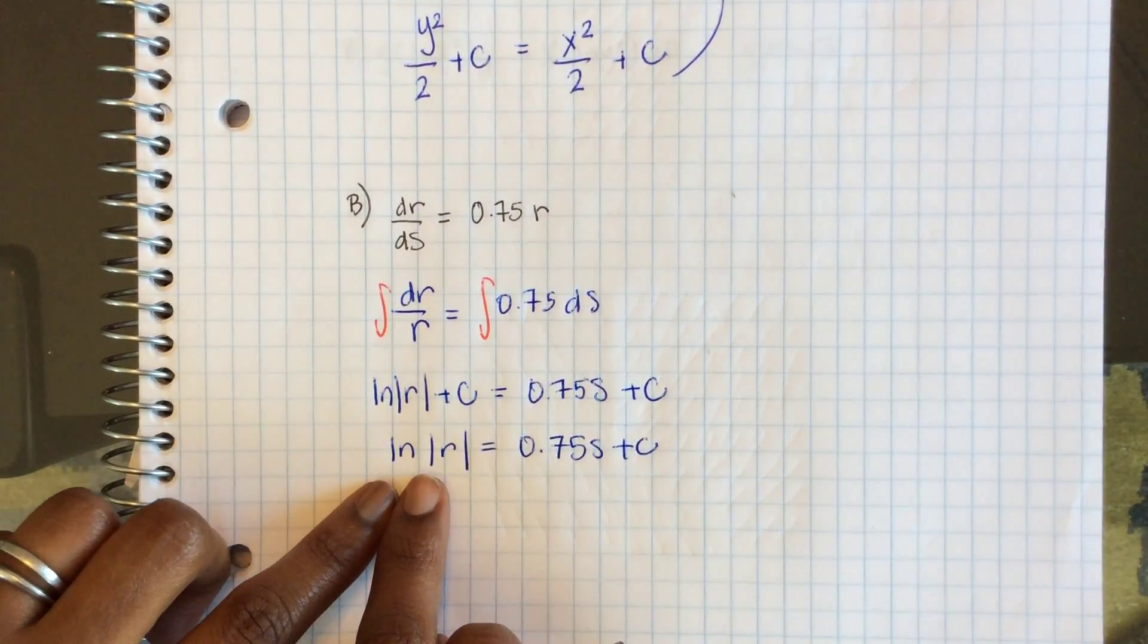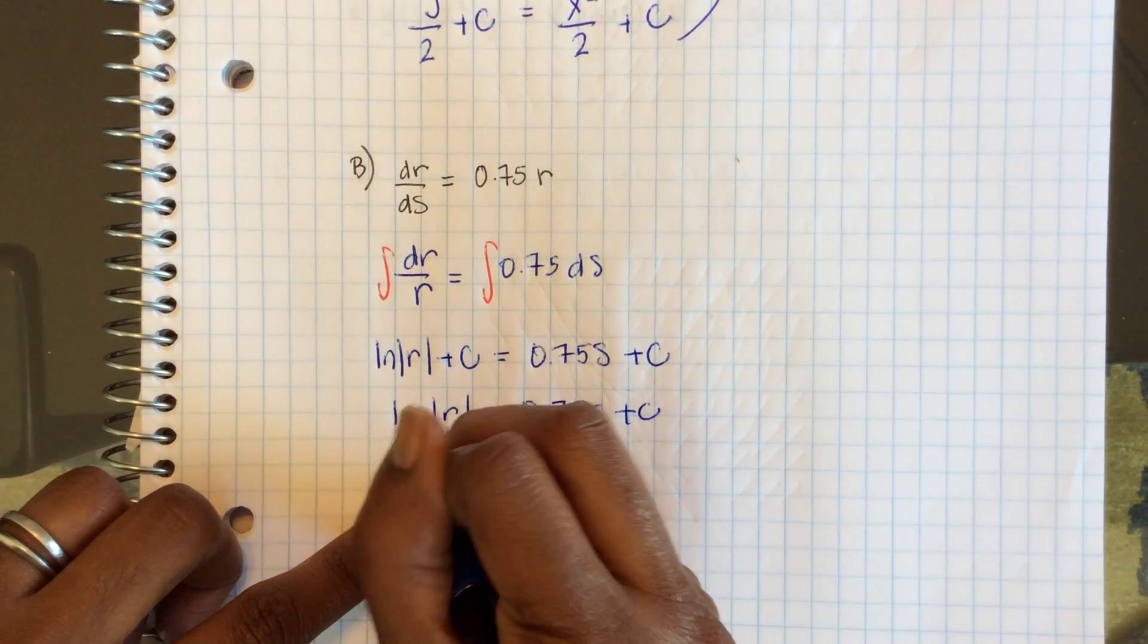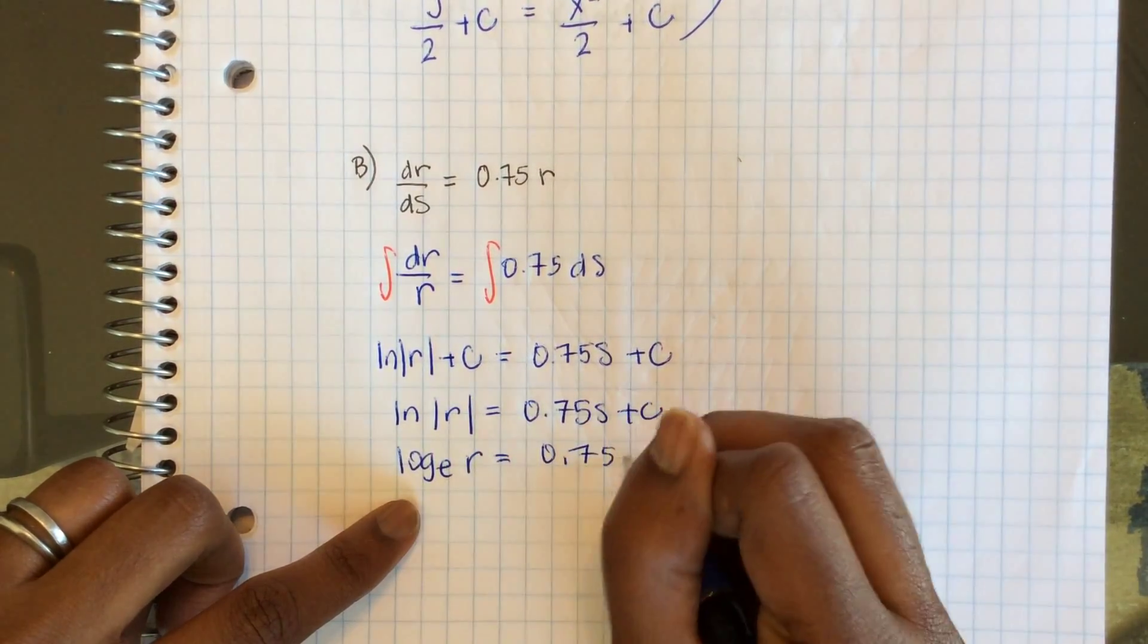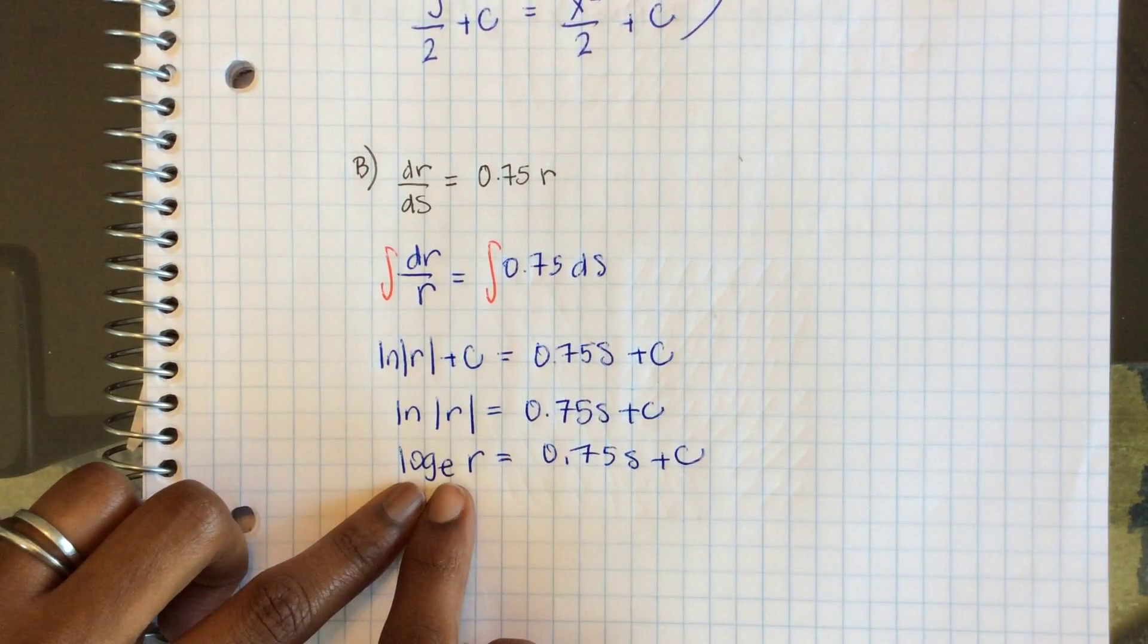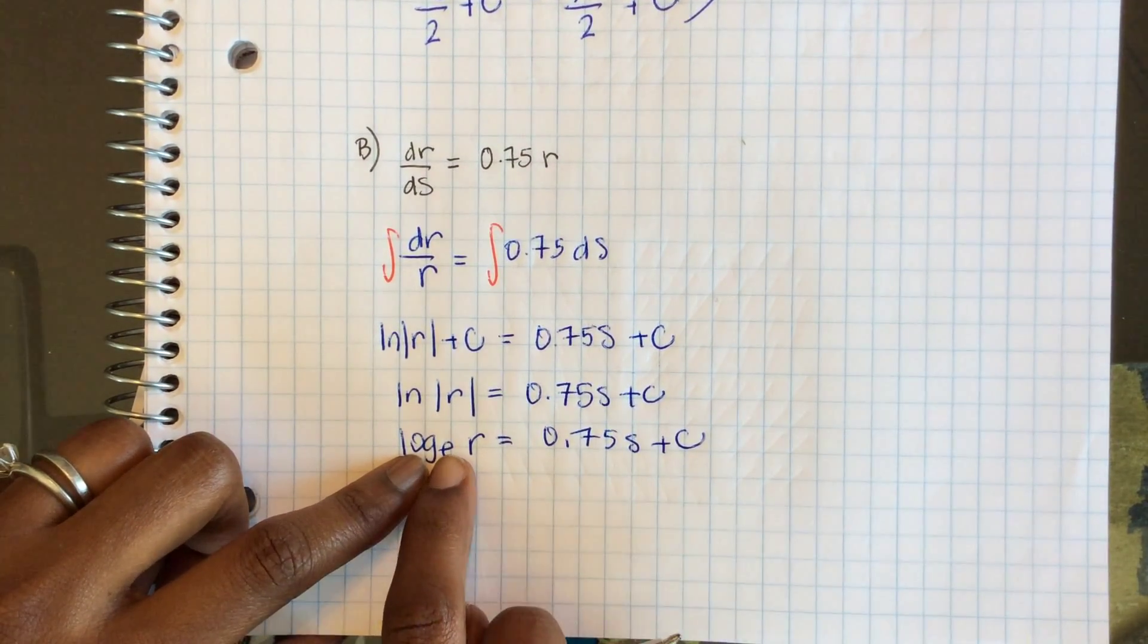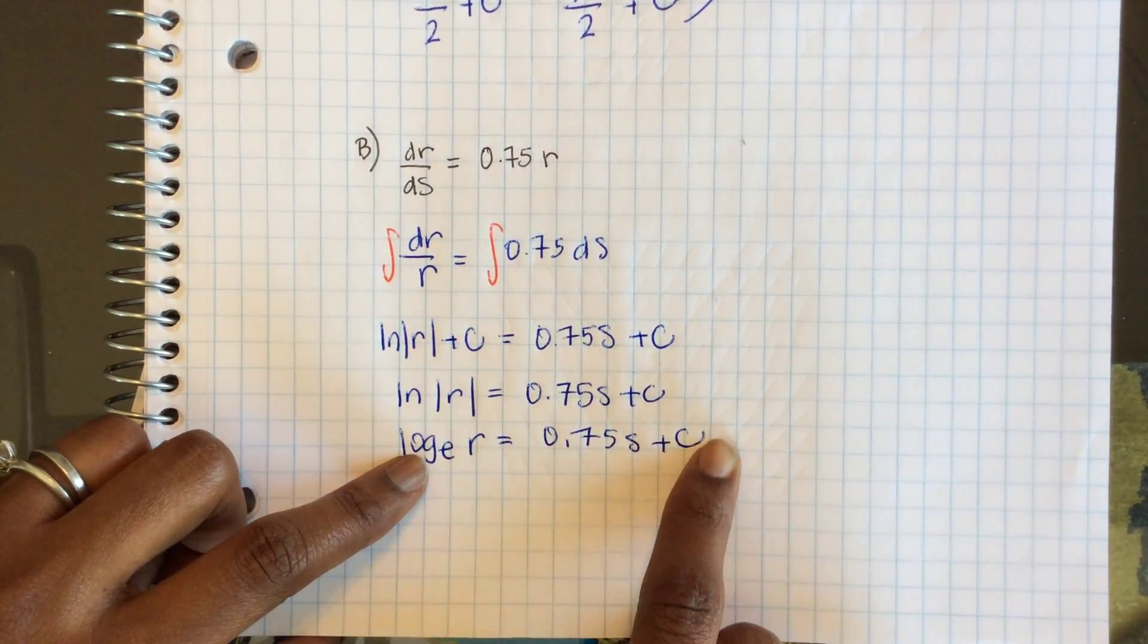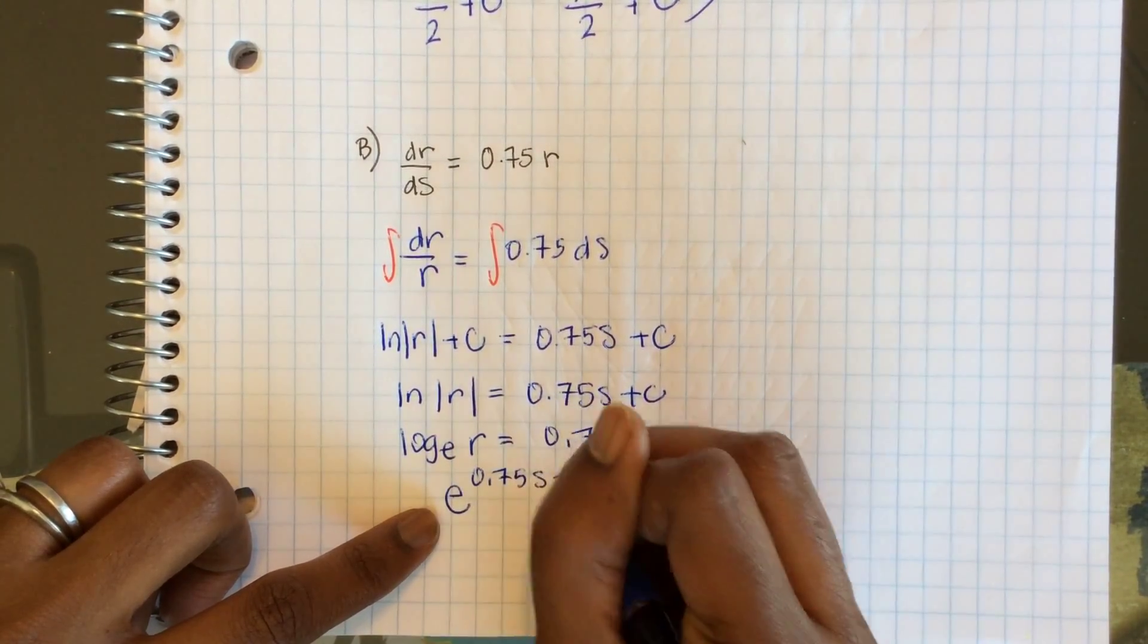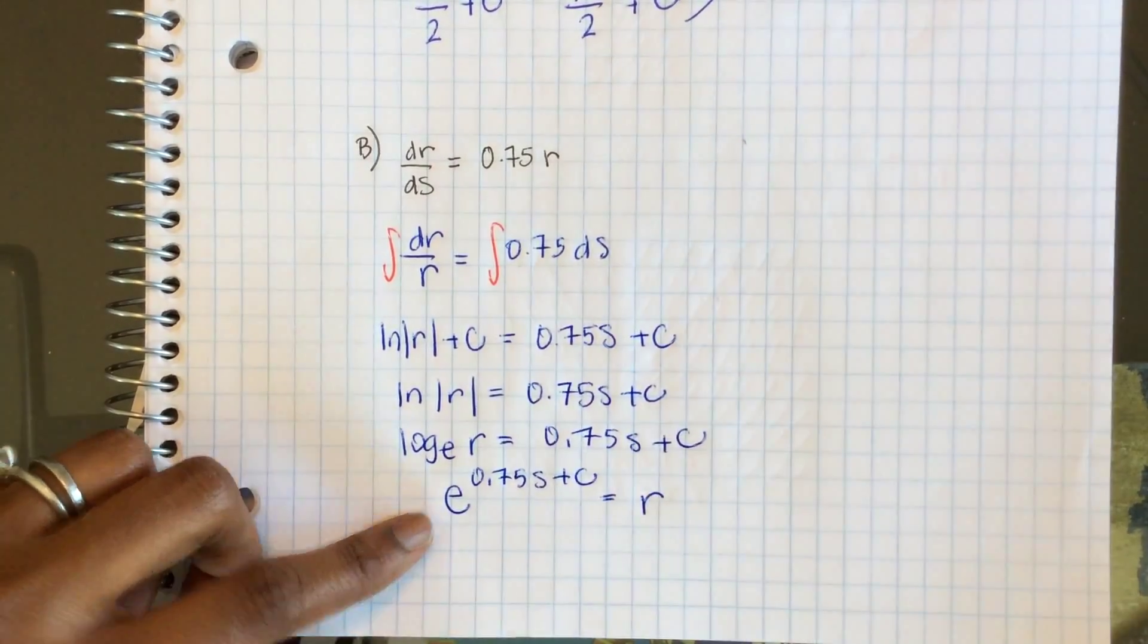And now this ln is log base e of r equals 0.75s plus c. So to solve for r, I will rewrite this in exponential form. e to the 0.75s plus c equals r.